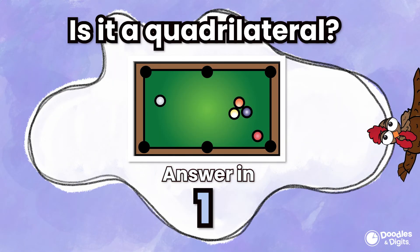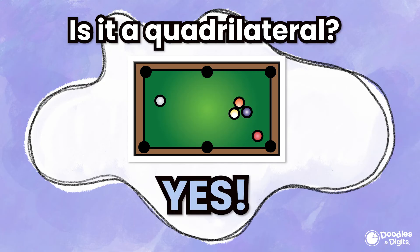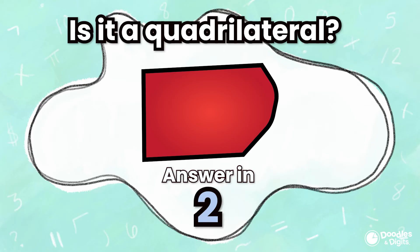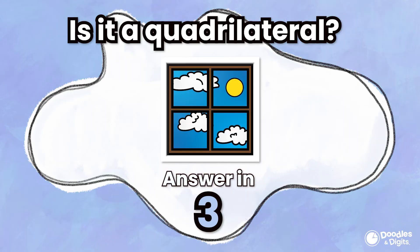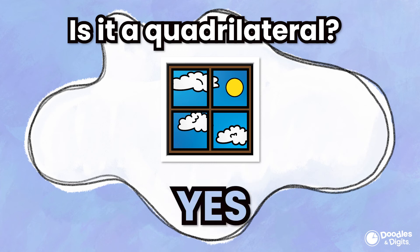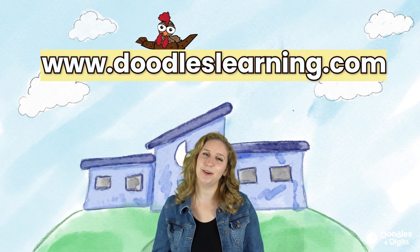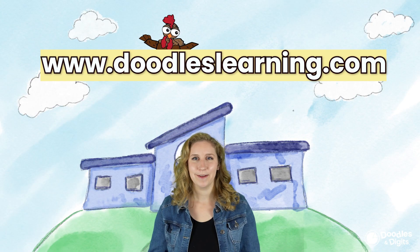Now that we've done a few together, let's see if you can figure out which ones are quadrilaterals on your own. Yes, this is a rectangle. No, the curved line is not a line segment, so this makes it not a quadrilateral. Yes, this is a square. How'd you do? Do you think you can identify a quadrilateral in the real world? Want more videos just like this one? Make sure you subscribe to our YouTube channel — we put new videos out every month. Bye!